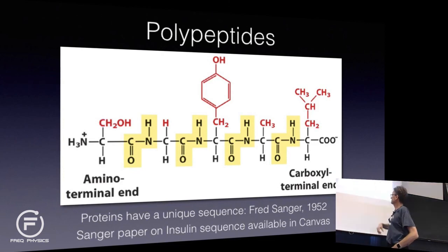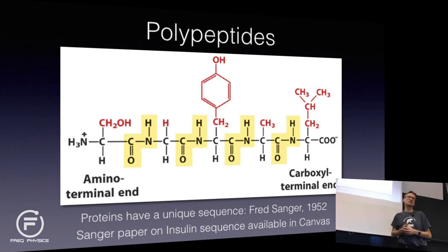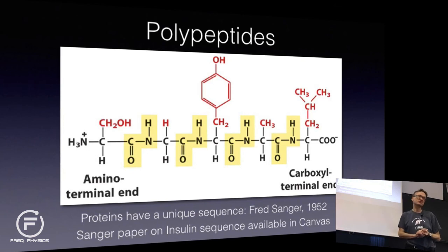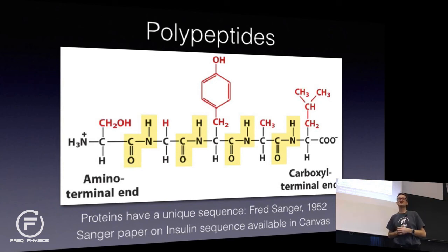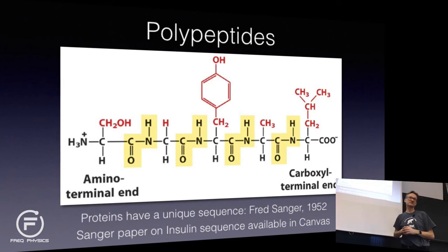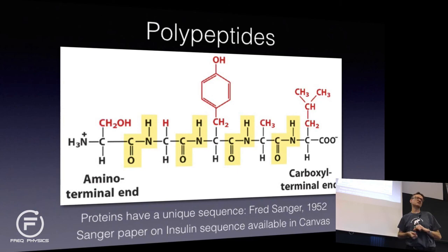When it comes to sequencing, it was Fred Sanger in 1952 who proved that proteins have a unique sequence — he managed to sequence it and got the Nobel Prize for this. At SciLifeLab, we sequence roughly the equivalent of one human genome per day nowadays. The first human genome was a worldwide endeavor that took 10 years, and now we do it in one day at one site. Fred Sanger sequencing insulin probably took three or four years. There's no other method that creates more biological information today than sequencing — it's exceptionally powerful.